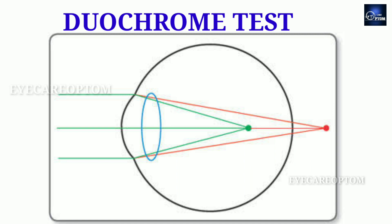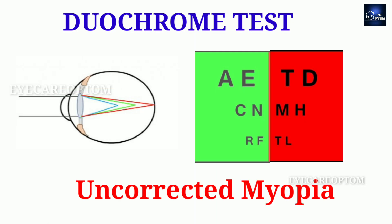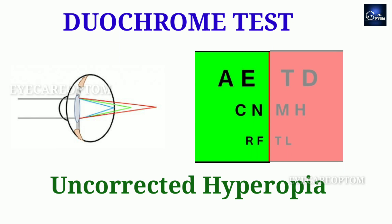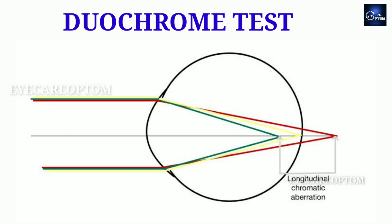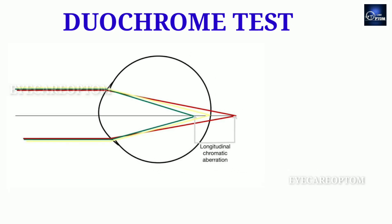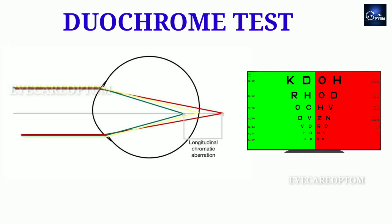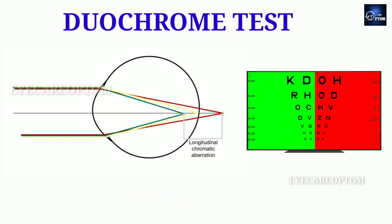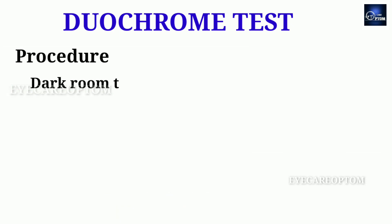The long wavelength (red) is refracted less than the shorter wavelength (green). In the Duochrome test, for myopic eyes without correction, red background letters will look clearer. For hyperopic eyes without correction, green background letters will look clearer. The best vision is attained when yellow wavelengths are focused on the retina — with optimal correction, both red and green backgrounds will look equally clear and accommodation will be relaxed.